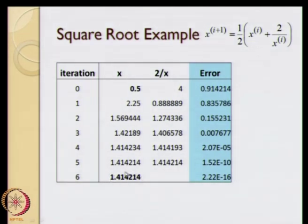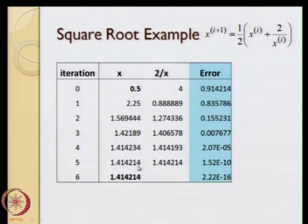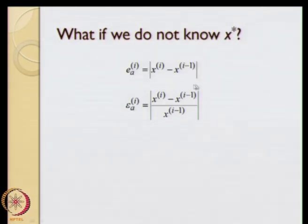If you remember from module 1, we stopped at iteration number 6. The reason we stopped at iteration 6 is because the result was not changing from the fifth to the sixth iteration up to the desired accuracy we were seeking — specifically, that the sixth decimal place should not change. The stopping criterion was not based on whether the true value is reached, but whether there is a significant change in the approximate value with each iteration. This is where the approximation error between the ith and (i-1)th iteration is very handy when we do not know the value of x star.